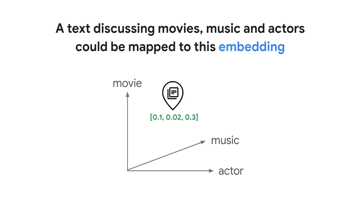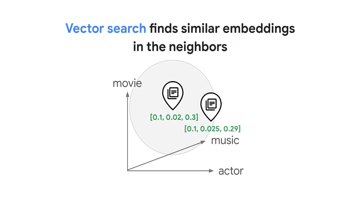Vector Search allows you to quickly find similar texts by searching for the neighbor on this map. This is called semantic search, and it's based on meaning, not just keywords.